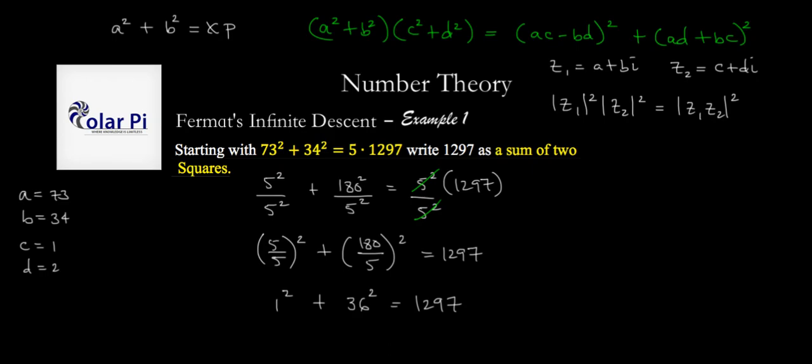Now I'll make videos on this, but anytime you have a prime number p that is congruent to 1 mod 4, you can always write p as a sum of two squares. And we can even prove this, why this statement is true, and I'll make many videos on that.